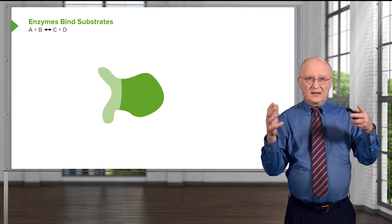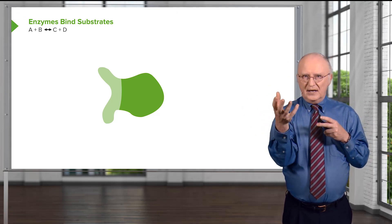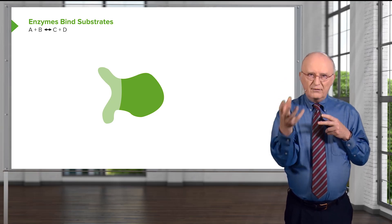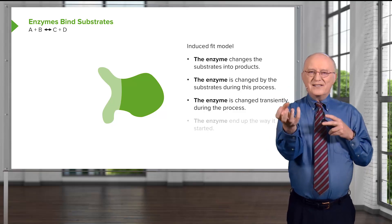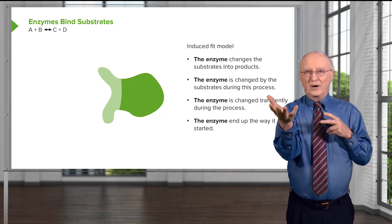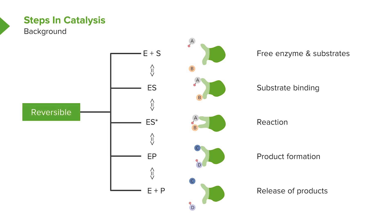If we think about this, our definition of a catalyst from freshman chemistry is a molecule that catalyzes a reaction but is unchanged in the process. We see that enzymes are actually slightly violating that principle — they're being changed transiently during the process, but they end up in the same state they started. A summary of all the steps shows that the arrows go both ways, meaning every step in this reaction is reversible. Reversibility is a very important thing to keep in mind when we're talking about metabolic processes, because we have to think about what conditions would make something go backwards.